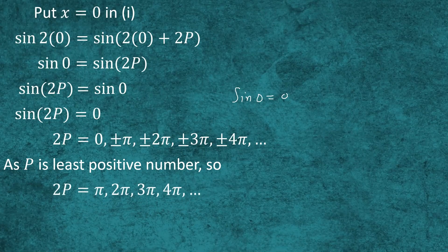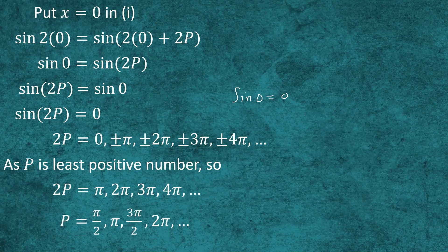Therefore, 2p will equal π, 2π, 3π, 4π, and so on. The corresponding values of p will be π/2, π, 3π/2, 2π, and so on. We replace these values one by one into expression 1 to find the least period of the given function.